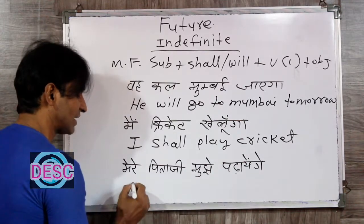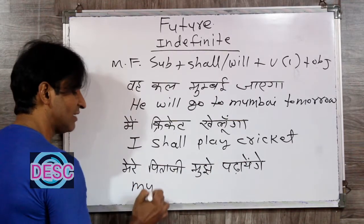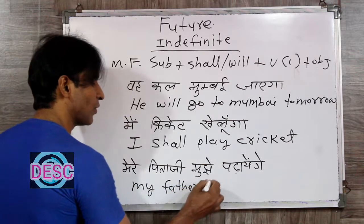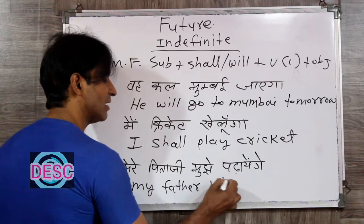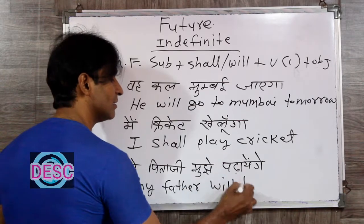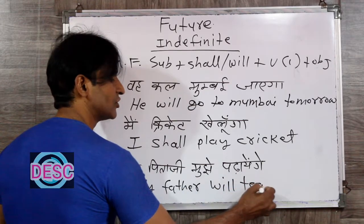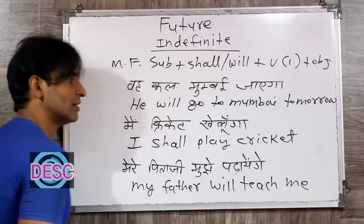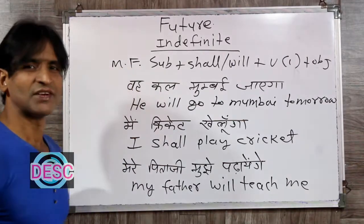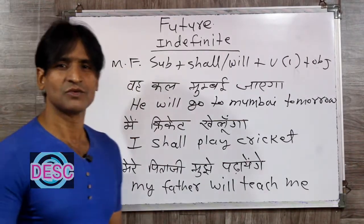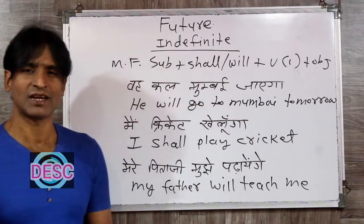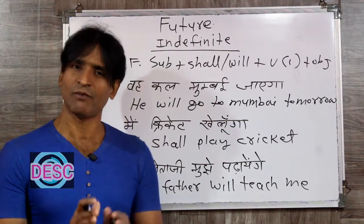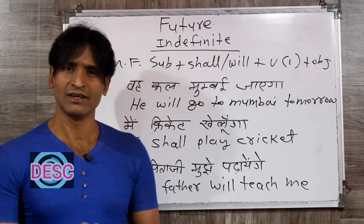'Mere pita ji mujhe padhayenge' — My father will teach me. It is simple friends, no big deal. Just use shall or will and add the first form of the verb. Okay.